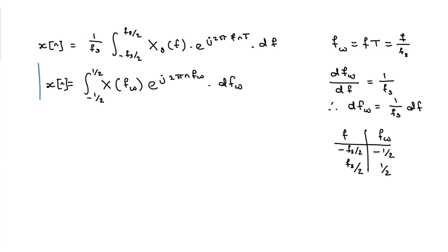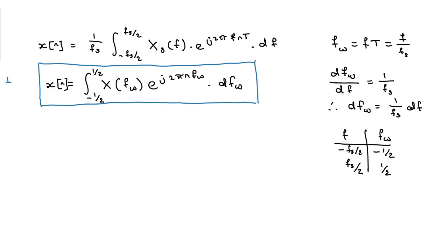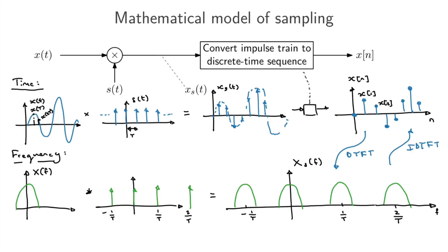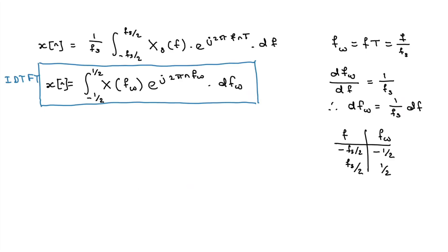We end up with x[n] = ∫ from -1/2 to 1/2 of X(F_omega) · e^(j2π·F_omega·n) dF_omega. This is the inverse discrete-time Fourier transform. Notice there's no time variable anywhere in this equation — time has disappeared, which makes sense since on a computer we just store samples without explicit time. You can also write it in terms of omega; it's simply the Fourier transform specialized for discrete-time signals.